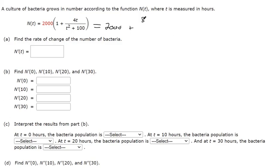This is 8000t over t squared plus 100. So when we take a derivative, we can go term by term. Taking a derivative of a constant is zero, and so we need a quotient rule for this derivative. So it's the derivative of the top function times the bottom function unchanged, subtracted by the top function unchanged times the derivative of the bottom function.